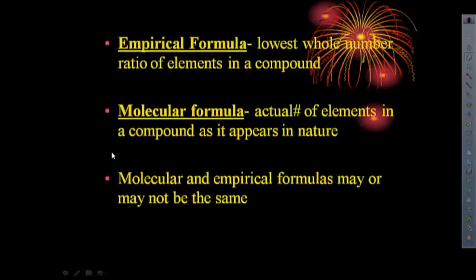We're going to be talking about empirical and molecular formulas. An empirical formula is the lowest whole number ratio of the elements in a compound, while the molecular formula is the actual number. It could be the lowest whole number ratio, or it could be a multiple of the empirical formula. So sometimes they're the same, sometimes they're different.